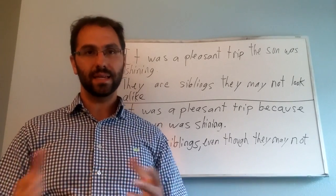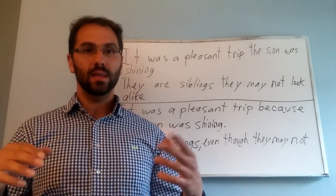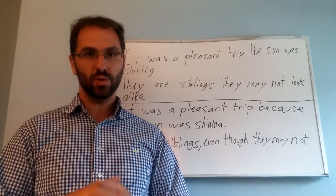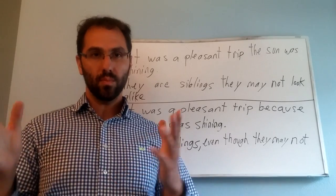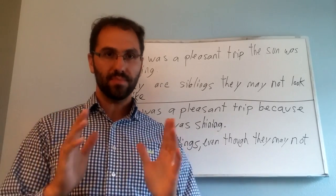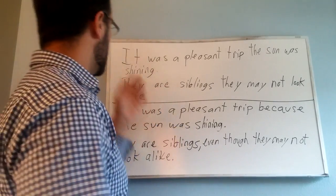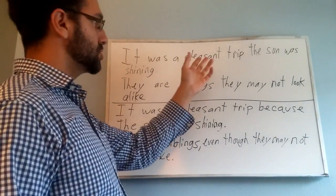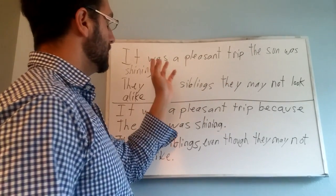So another type of typical sentence error is a run-on sentence, and this is in which two independent clauses, or more, are improperly joined together. For instance, it was a pleasant trip, the sun was shining.